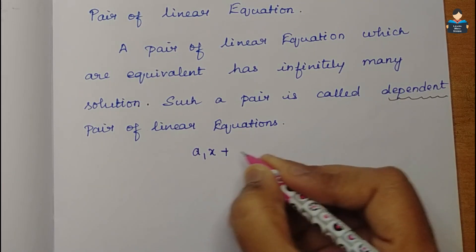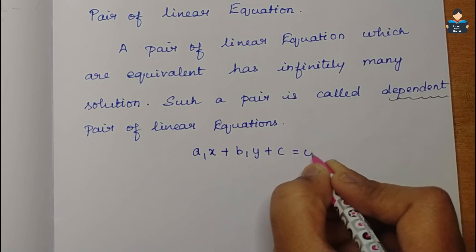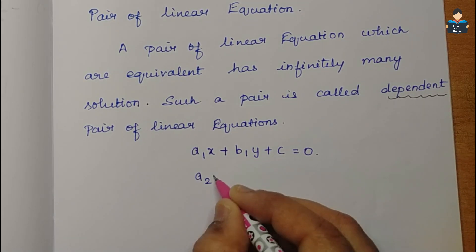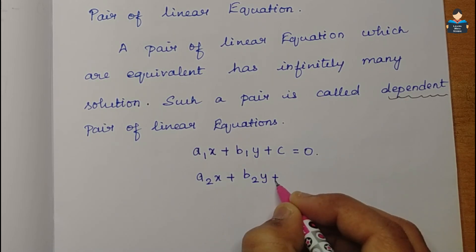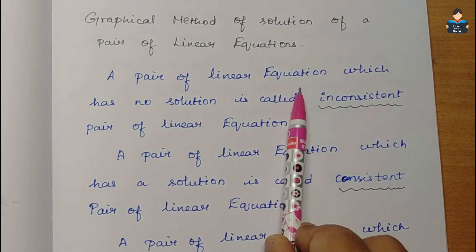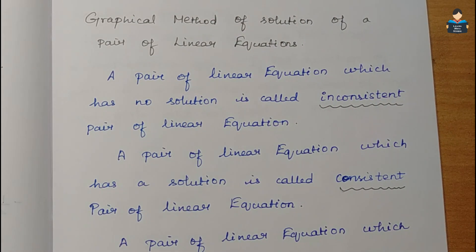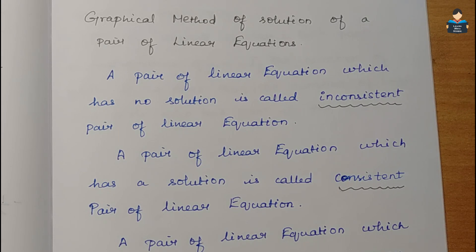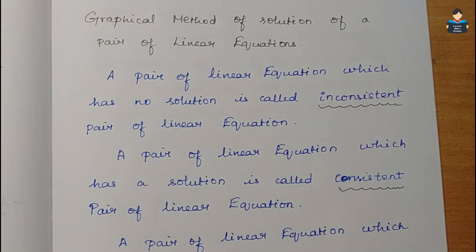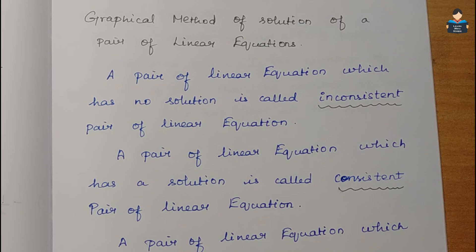The general form of a linear equation is a1x + b1y + c1 = 0, and the second equation is a2x + b2y + c2 = 0. When a pair of linear equations has no solution, or when we cannot solve the two equations, those linear equations are called inconsistent.